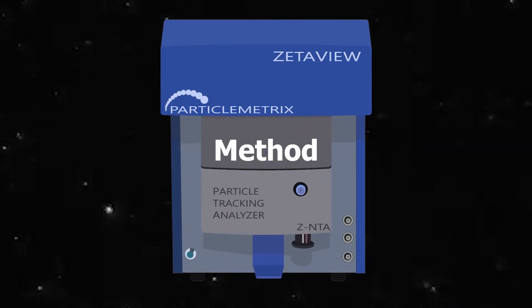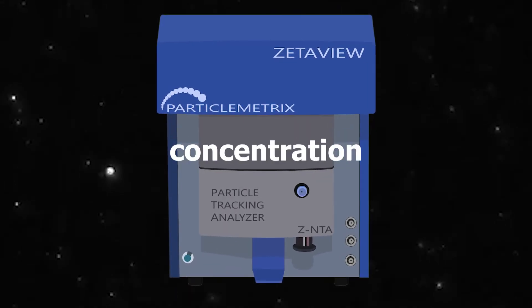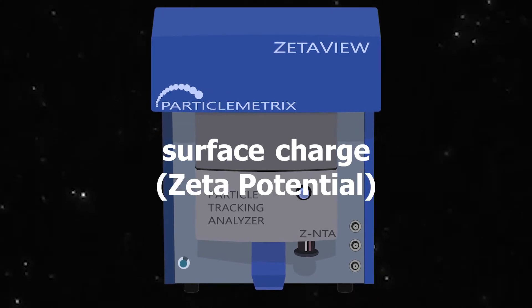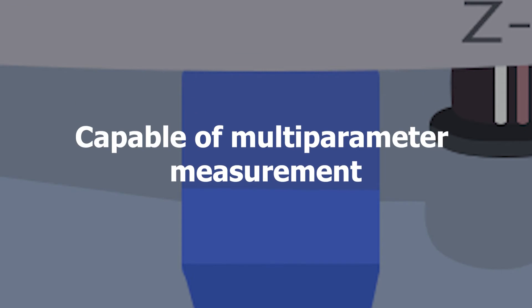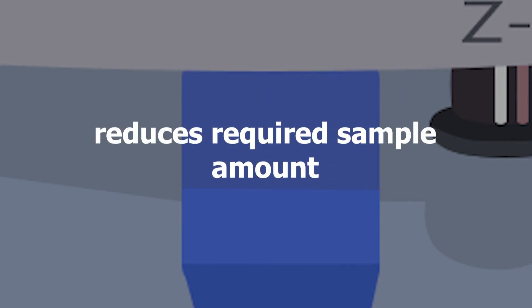NTA is a widely adopted method of measuring particle size, concentration, surface charge, otherwise known as zeta potential, and fluorescence. This versatile technique is capable of multi-parameter measurement for many types of particles, saving time and reducing required sample amounts.